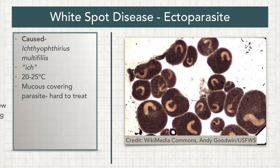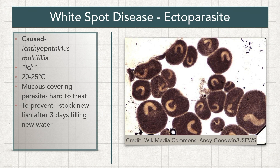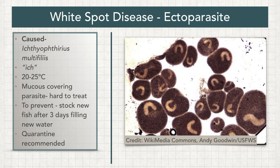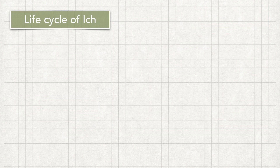One of the ways to prevent the entrance of ICT into a new pond is to wait 3 days after filling new filtered water into the pond. This may allow juvenile ICT from wild fish, which may accidentally enter the pond, to die before they could reach a new host. Quarantining a new batch of fish in another system prior to introducing them to the pond is also a recommended preventive measure.